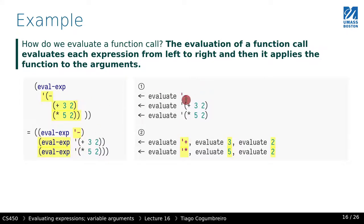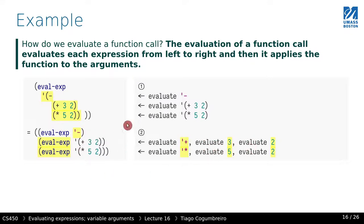When evaluating a function call, we recursively evaluate each of its components. To evaluate three plus two, I first recursively evaluate the function plus, then evaluate number three, then evaluate number two. How do we evaluate numbers? As we've seen, you just return the value.